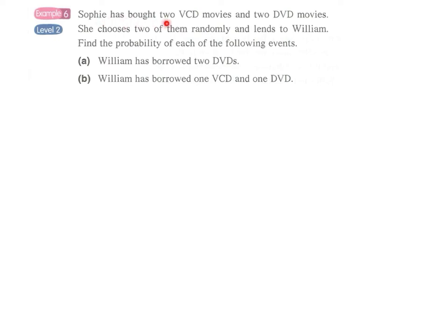And now we come to example 6. Sophie has bought two VCDs we can denote them by using V1, V2, and then two DVDs we can denote them using D1 and D2.